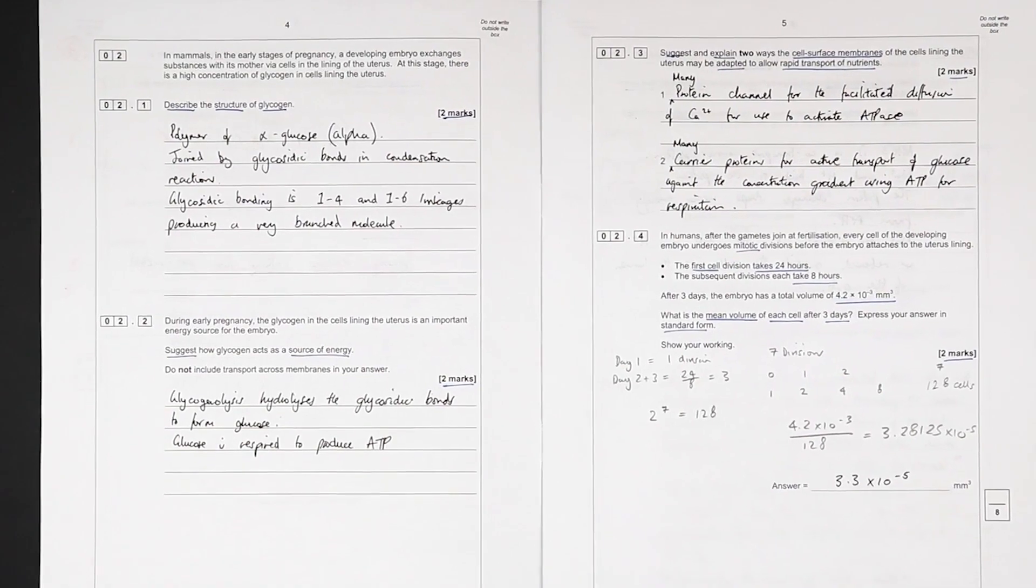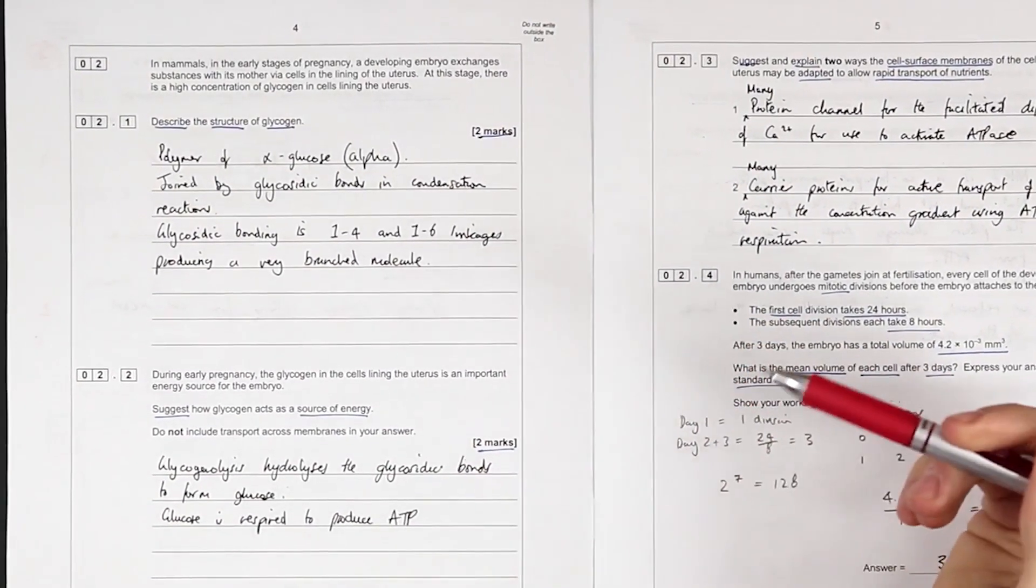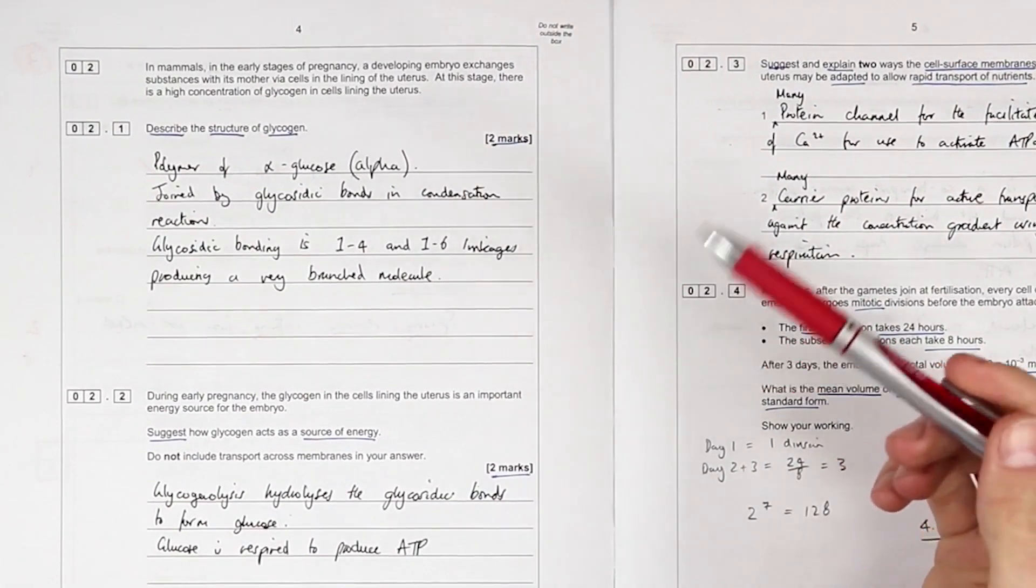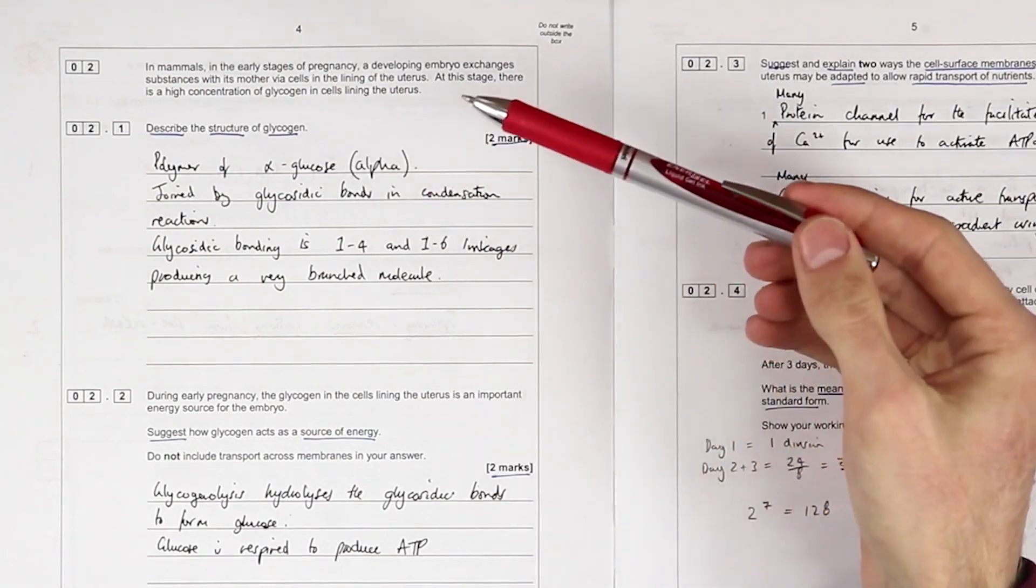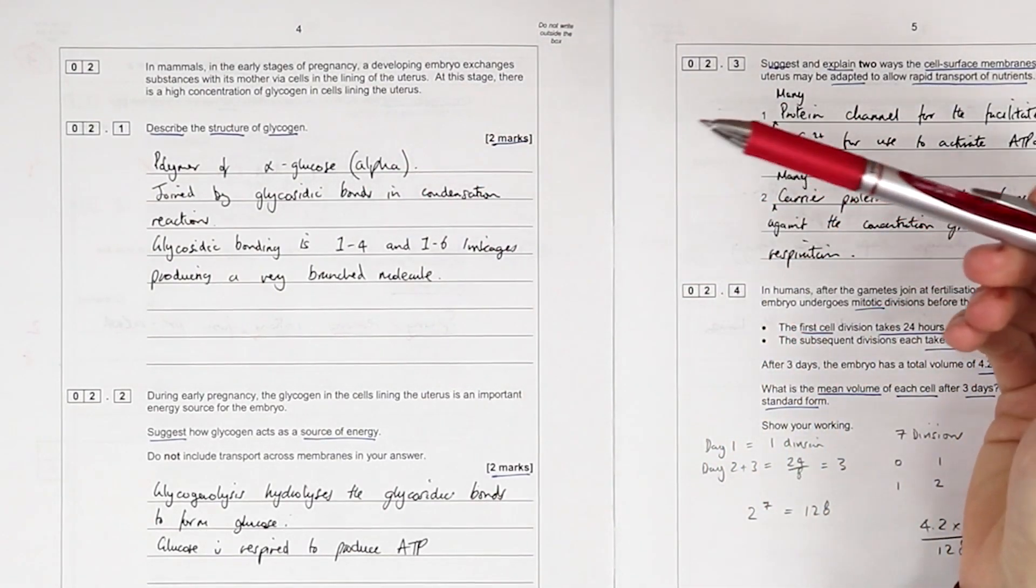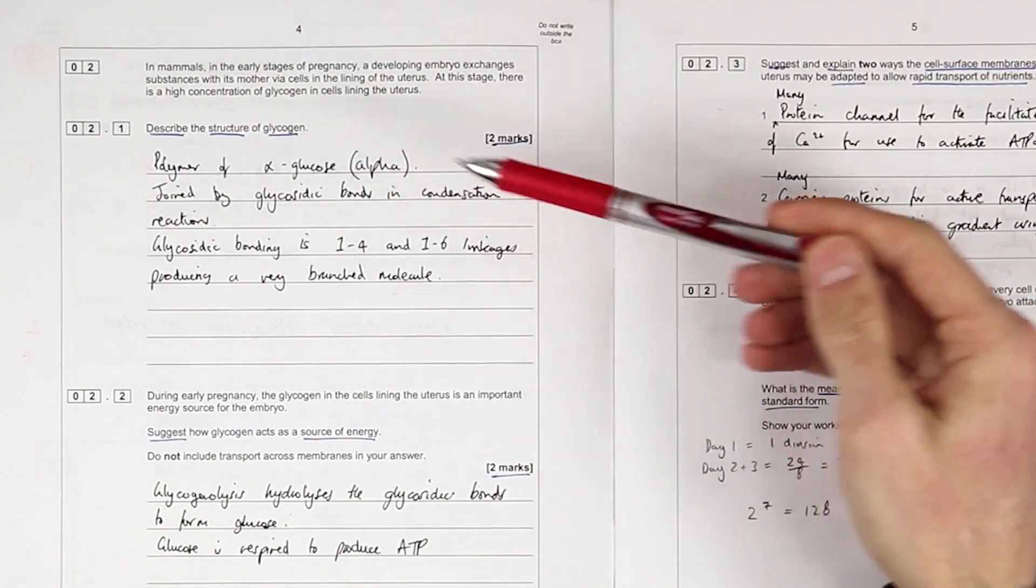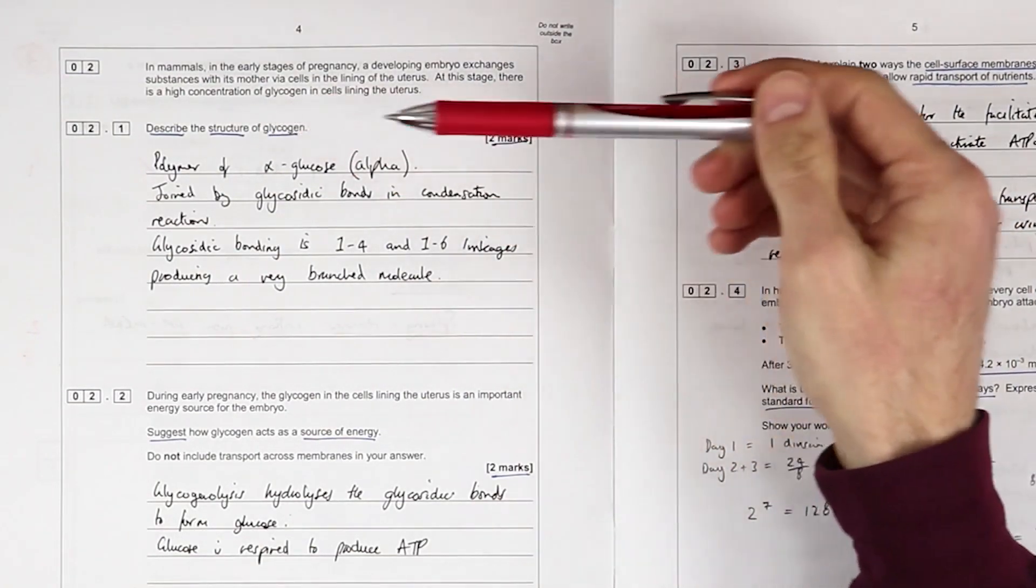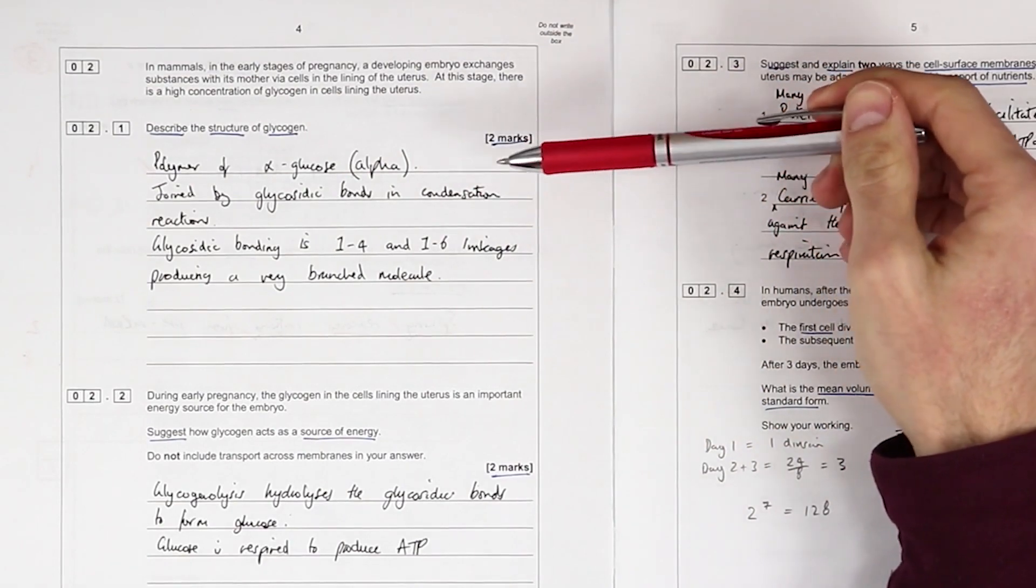Marking of question two. The first part is describe the structure of glycogen. When answering this, you can't really link it to function—you're just looking at: is it a polymer, is it a monomer, what bonds join it, what type of reaction joins those bonds, even though it's not really related to the structure of glycogen, it's often a mark we'll see in a second.